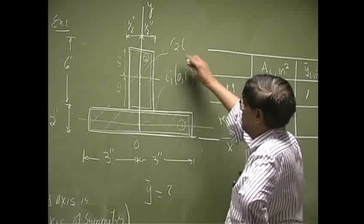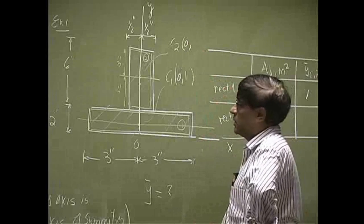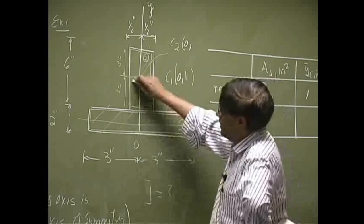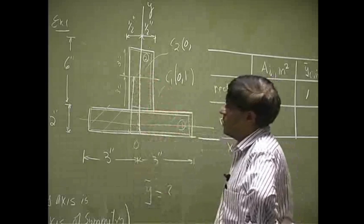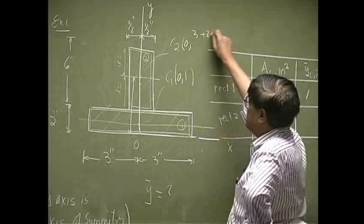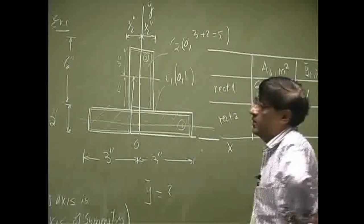Now on c2, the same thing. The x-coordinate is 0. The y-coordinate is going to be a distance going from here up to here. That's 3, additional distance 2, or 5.